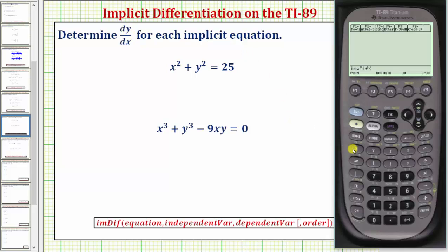So now we'll enter x raised to the power of two plus y raised to the power of two equals twenty-five comma. Again, because we're looking for dy/dx we know x is the independent variable and y is the dependent variable.